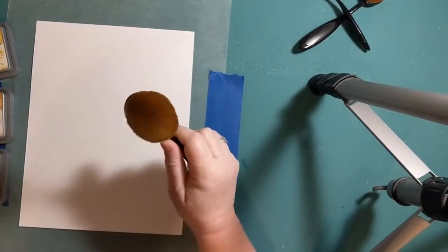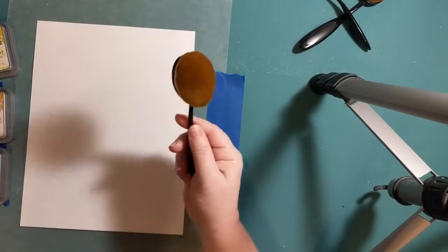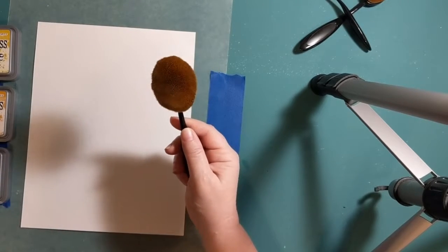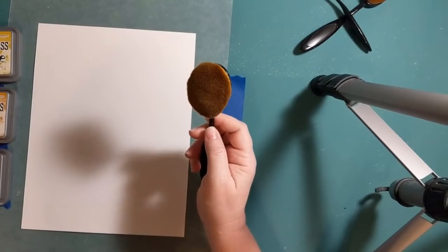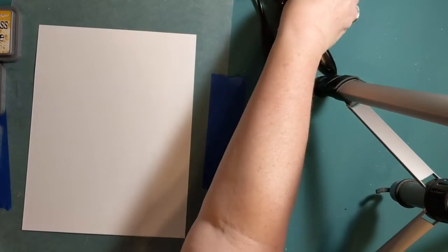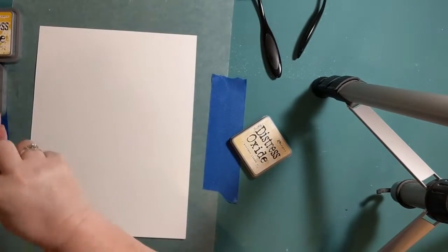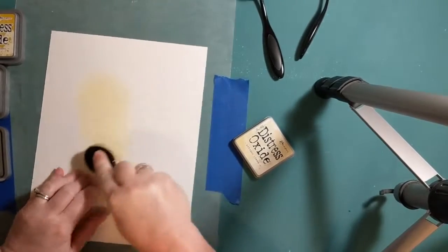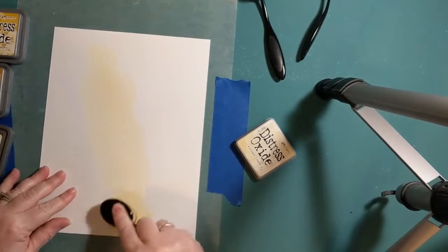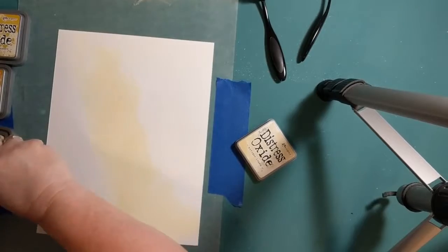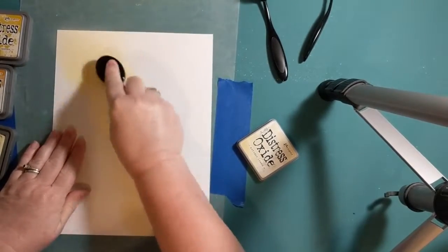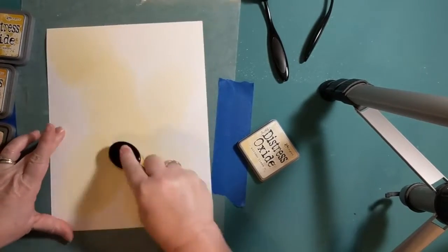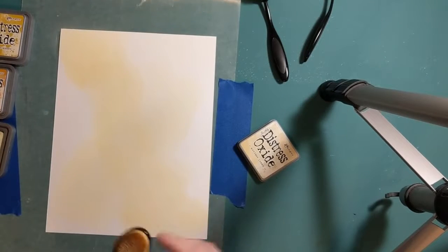This is still pretty new to me, using the Distress Oxide inks and these brushes. I haven't used the Distress Oxide inks very often. I've actually just recently got some and been playing around with them. So it's new to me, but I'm learning. So we're going to start with these three colors. Let's start with this medium brush here. We're going to go with this Antique Linen. And I'm just going to rub my brush across that. And then I'm just going to kind of start doing the color. We're blending it nicely here.